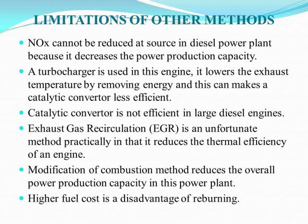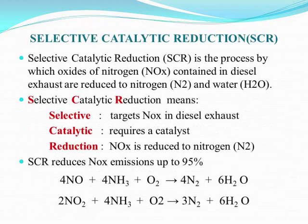The limitations of other methods are as follows: NOx cannot be reduced at source in a diesel power plant because it decreases power production capacity — generally 200 megawatt. Exhaust gas recirculation can be installed but reduces thermal efficiency of the engine. Modification of combustion also reduces overall power production capacity.